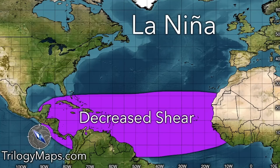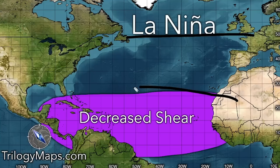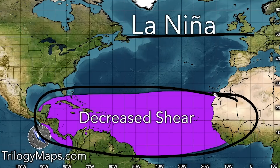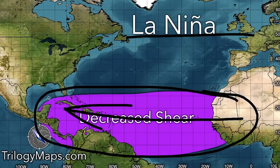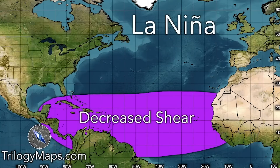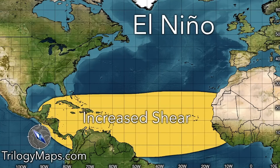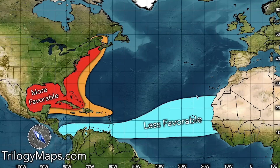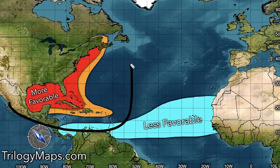In a La Niña, by contrast — which we don't expect — you would see decreased shear and less hindrance of storm development across this area. With El Niño we're going to see more suppression. Whether that leads to actually below-normal storms is less of a guarantee, but this factor will definitely hold back development potential.